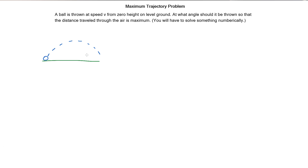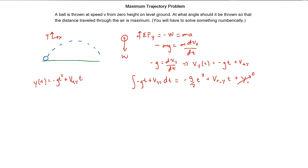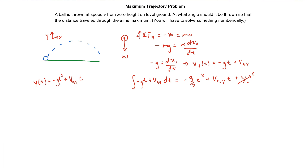What we have here is flat ground and a ball being thrown from the ground, creating a parabolic trajectory. What we want to do is actually maximize the length of this curve — not the horizontal distance from A to B. We want to maximize the whole arc. That's where the difficulty comes in. I'm not sure how to solve this yet, but I know there's going to have to be a derivative somewhere because we have to maximize something.